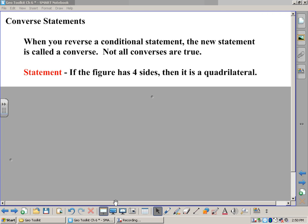The next idea in our Geometry Toolkit in Chapter 6 is called Converse Statements. What I'd like you to write down right now in your toolkit is: when you reverse a conditional statement, the new statement is called a converse. Not all converses are true.